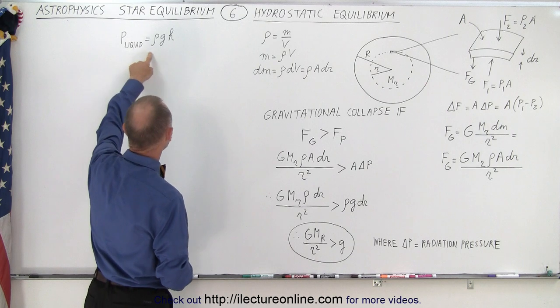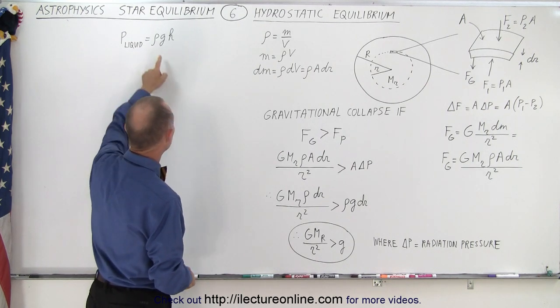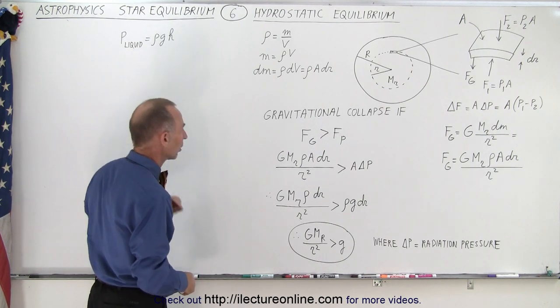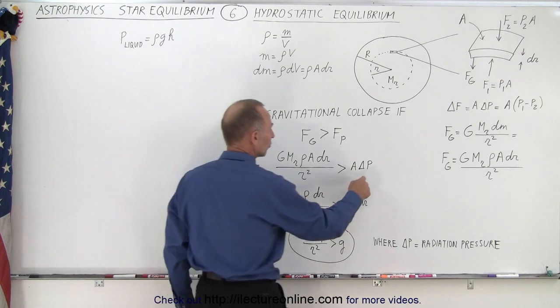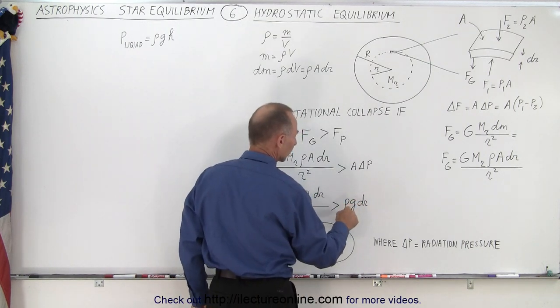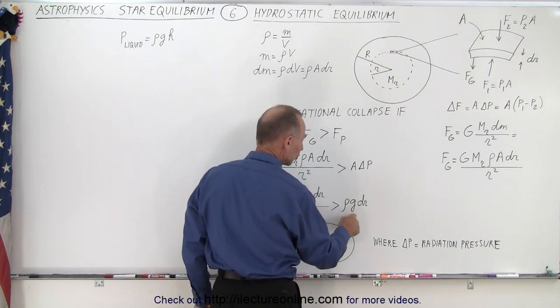Well, we know that the pressure inside the liquid is rho gh. So in this case, it's going to be rho g times delta r. So instead of the change in pressure, we can simply write it as rho g dr.